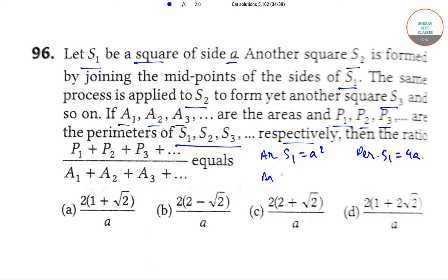Area S2 is equal to A squared by 2 and perimeter S2 is equal to 4A by root 2.